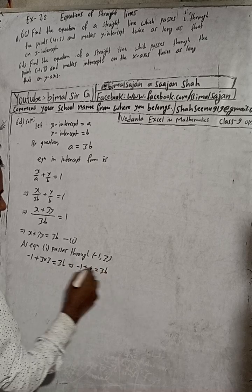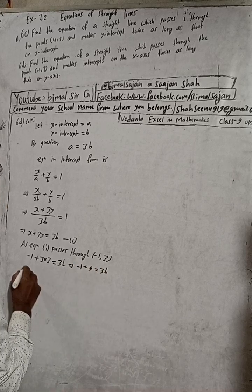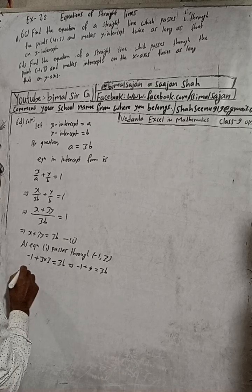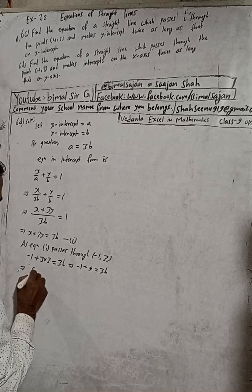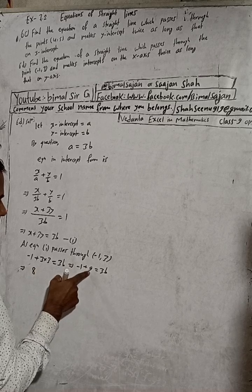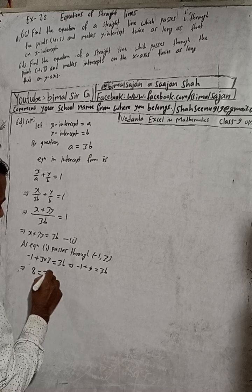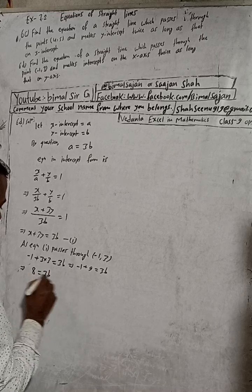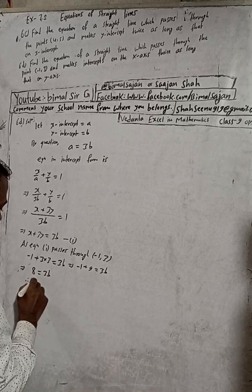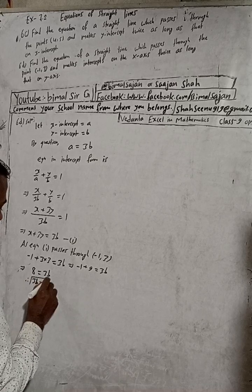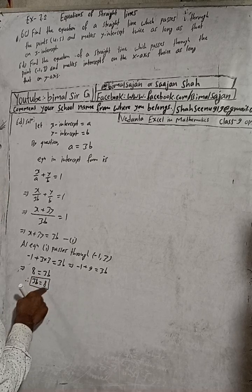This implies minus 1 plus 9 is equal to 3b. Both are opposite signs, so we will subtract. 9 minus 1 is 8, and the greater number is 9 which is plus, so this is plus 8 is equal to 3b. Therefore we can write 3b is equal to 8.